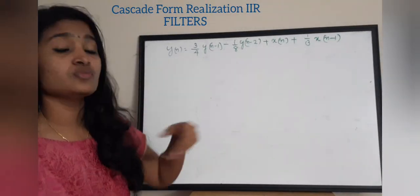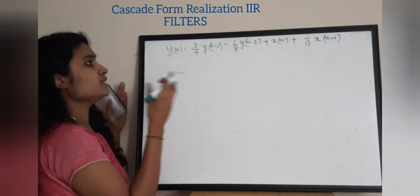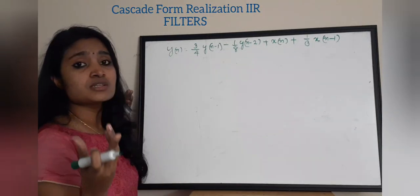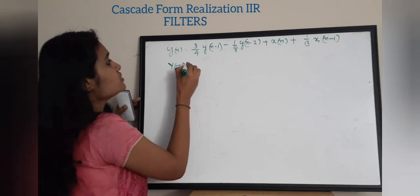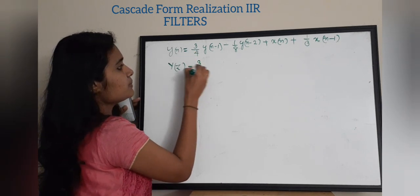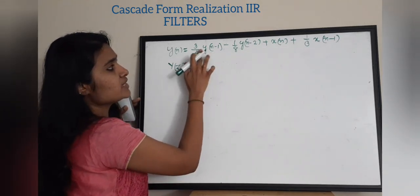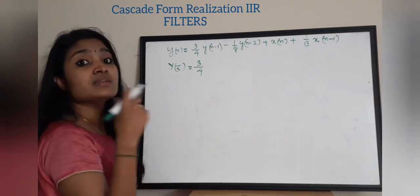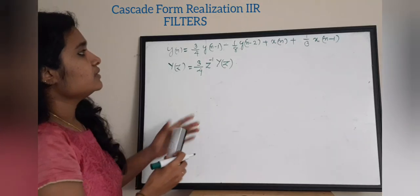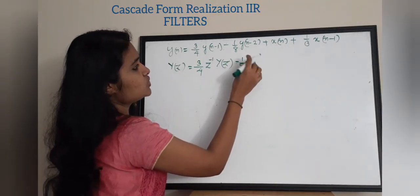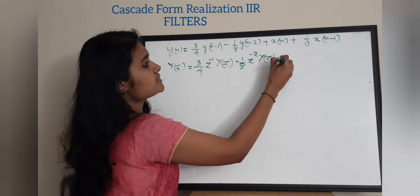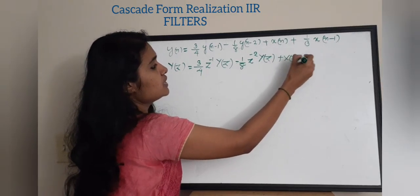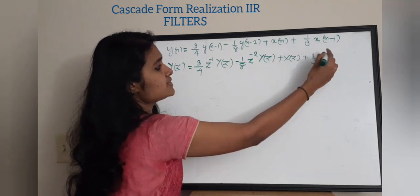We have to find the Z-transform of Y(n). Now, if you take the Z-transform of Y(n), it will be Y(z) — we generally use capital letters to represent the Z-transform. So Y(z) equals 3/4 times Y(z) — there is a Y(n−1) term, and the Z-transform of Y(n−1) is z⁻¹ · Y(z). Also minus 1/8 times Y(n−2), whose Z-transform is z⁻² · Y(z).